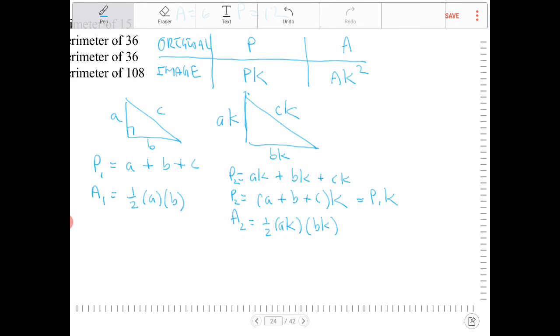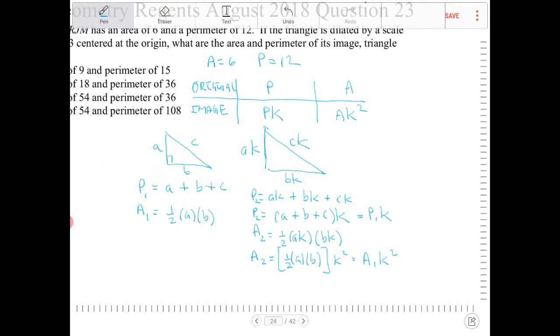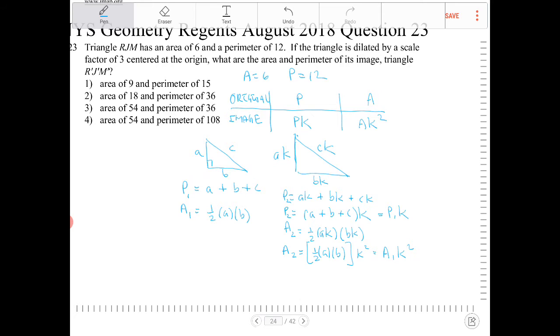And again, with a little bit of algebraic manipulation, this is the same thing as one-half a times b times k squared. And this is equivalent to A₁ times k squared. So it's the same thing as what I was telling you from the chart above.